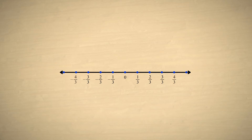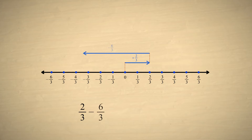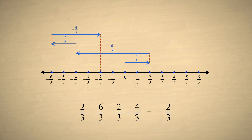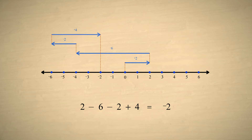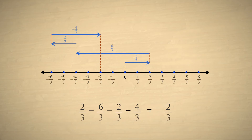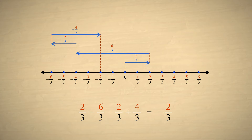For example, on the number line, adding the fractions two-thirds minus six-thirds minus two-thirds plus four-thirds looks a lot like adding the integers two minus six minus two plus four. Except that each division represents one-third unit instead of one whole unit. This is why we simply add the numerators of each fraction, since the numerators specify the number of divisions in each fraction.